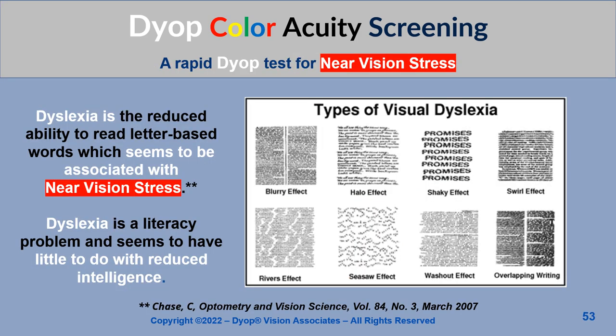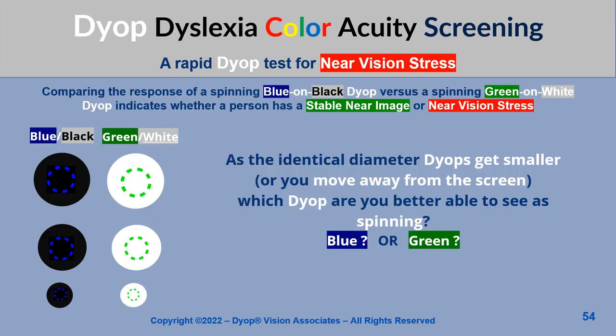The effect of color perception is illustrated by a condition called dyslexia — the reduced ability to read letter-based words, which seems to be associated with near vision stress. Dyslexia is a literacy problem and seems to have little to do with reduced intelligence. A simple and rapid dyop color test can indicate visual stress by comparing the response to a spinning blue on black dyop versus a spinning green on white dyop. Which dyop ring are you better able to see as spinning — the blue or the green?